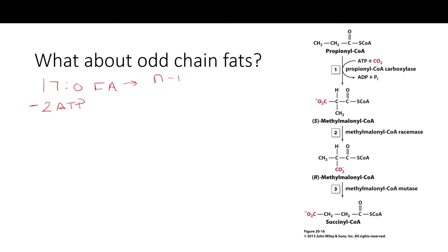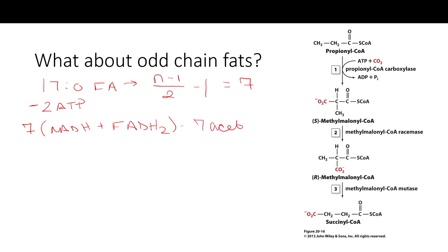So we still have 7 rounds of beta oxidation, generating 1 NADH and 1 FADH2 per round. The key difference is that at the end of beta oxidation, instead of an eighth acetyl-CoA (two-carbon chain), you end up with a three-carbon chain called propionyl-CoA.